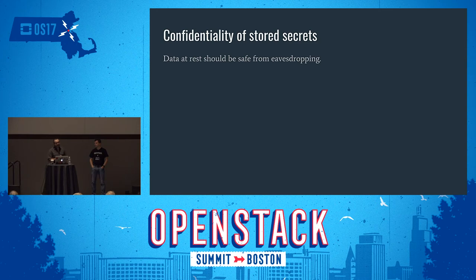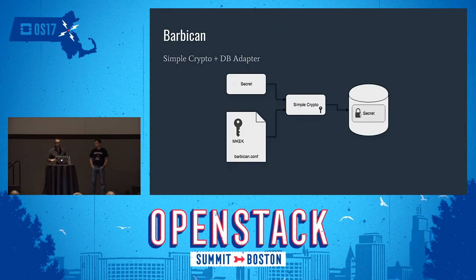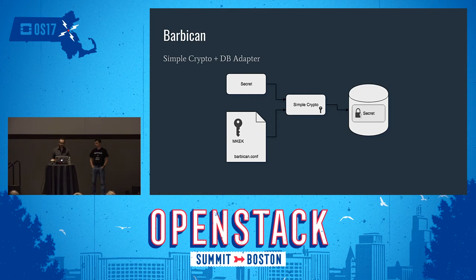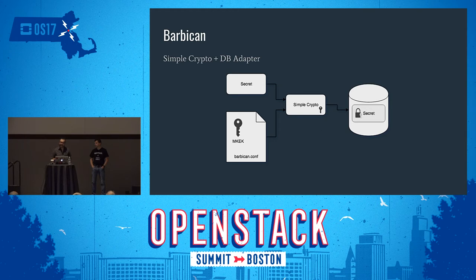For confidentiality of stored secrets, everything gets encrypted, but where the master key lives and how encryption happens is critical. In Barbican with the simple crypto plugin and database adapter, a master key sits in the configuration file — not very secure, but a configuration management system can be used to control access to that key. The simple crypto plugin loads it from configuration into memory and uses that key to encrypt all incoming secrets, with the encrypted bits stored in the database.